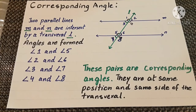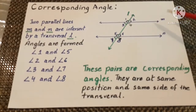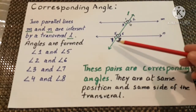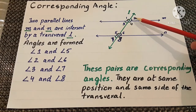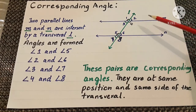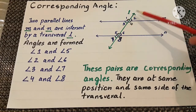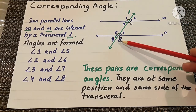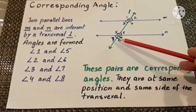Corresponding angles: when two parallel lines are intersected by a transversal, corresponding angles are formed. Line M and line N are parallel lines intersected by transversal L. Angles 1, 2, 3, and 4 are formed at the point where the transversal intersects parallel line M, and angles 5, 6, 7, and 8 are formed where the transversal intersects parallel line N.